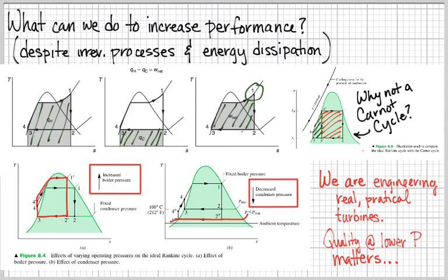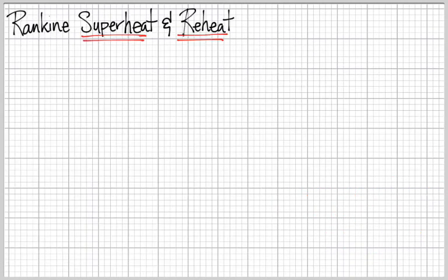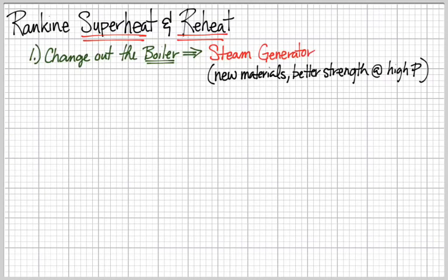The point here is that we are trying to increase performance while also dealing with real practical turbines. Quality at lower pressure matters far more than just making the area of work larger. Moving on to Rankine superheat and reheat: superheat is talking about going out to the superheated steam space. Reheat is a step where we realize that once we've superheated our steam it doesn't take much more energy to pump it back up and reheat the steam and then run it through a second turbine.